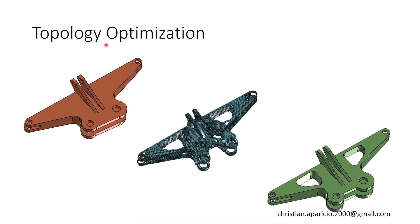The next one on the list is topology optimization. At a very basic level, you take a block of material, you constrain your model, apply various loads to it, and you have multiple load cases. The optimizer will then decide what material is critical for this design and which material is not critical. The non-critical material is essentially removed from the design. You'll get something like this at the end, which you then smooth out.